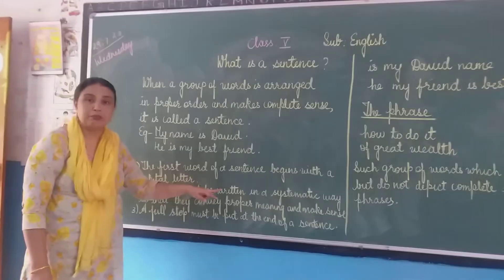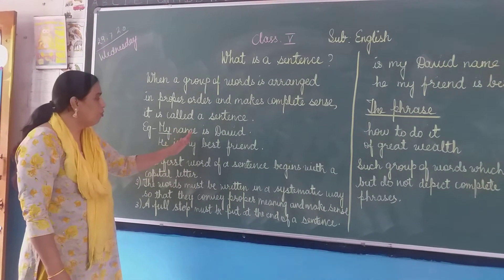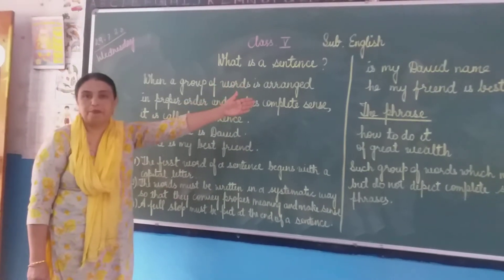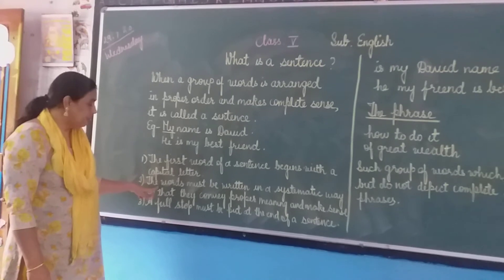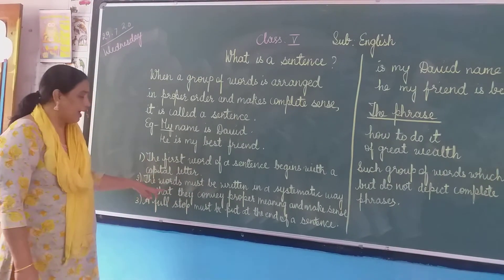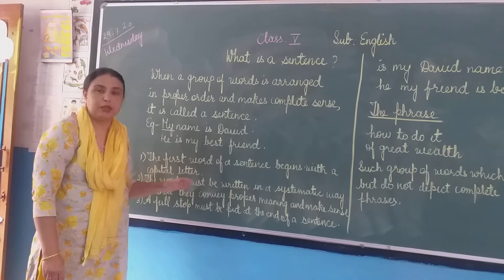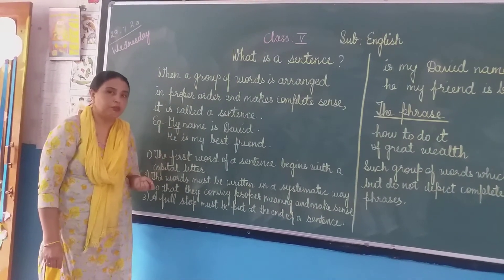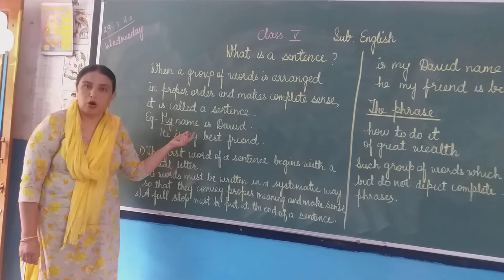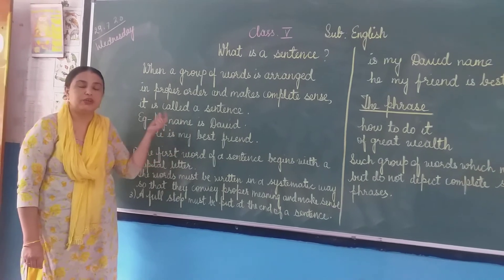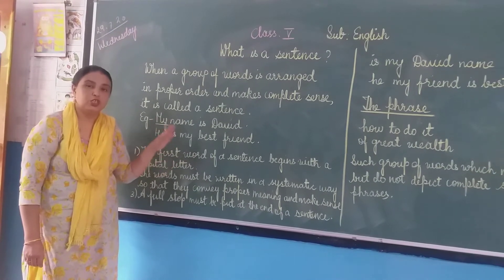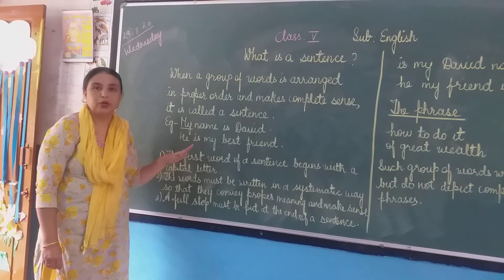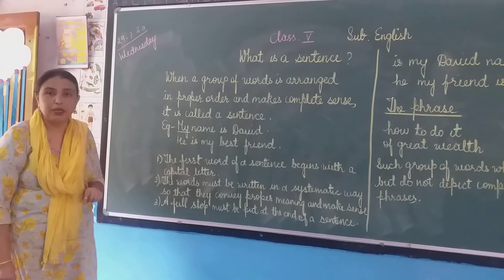Coming to the second point: the words must be written in a systematic way — that is very much important. For example, if I had written 'my David name is', that will not give the correct meaning. So the words must be written in a systematic way so that they convey proper meaning and make sense. When forming a sentence, it is very important that you put all the words in a systematic way. You cannot change the order however you want; if it is not giving a complete sense, then it is not called a sentence.